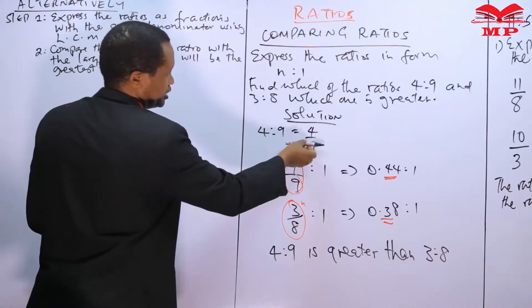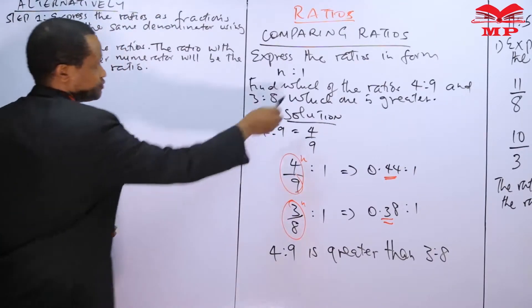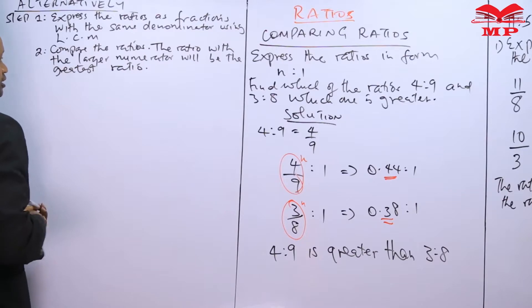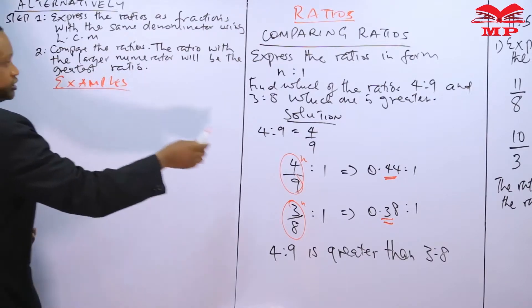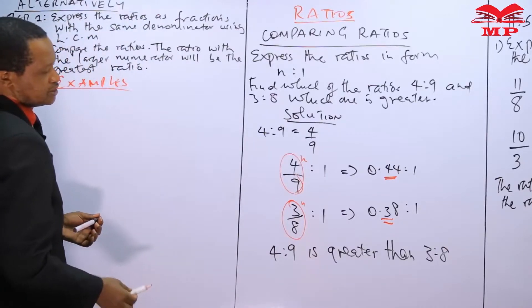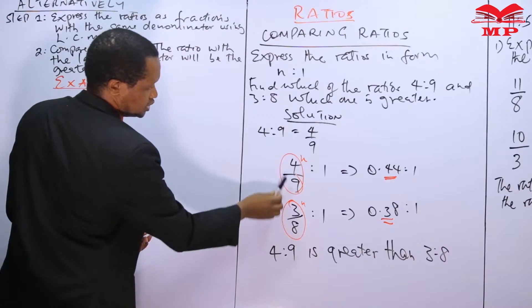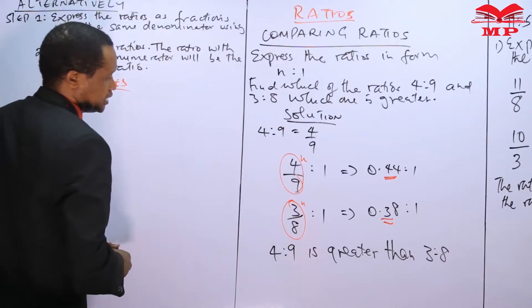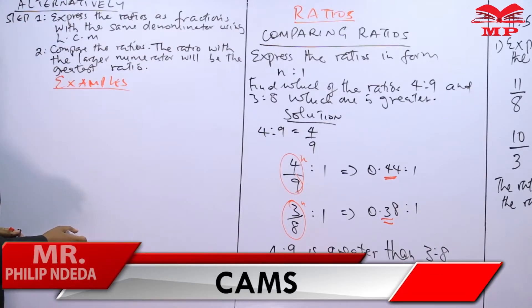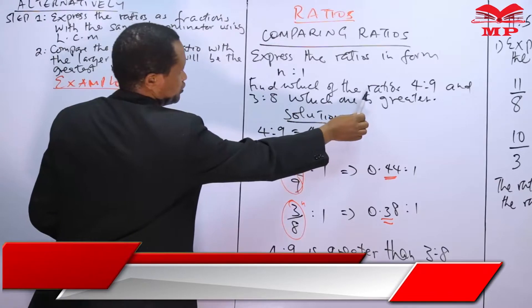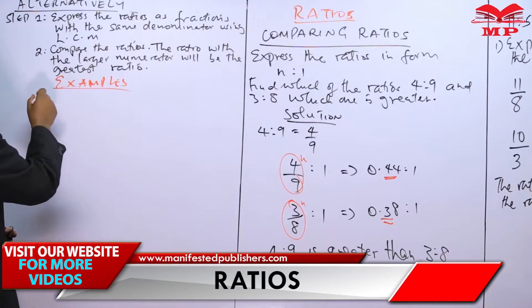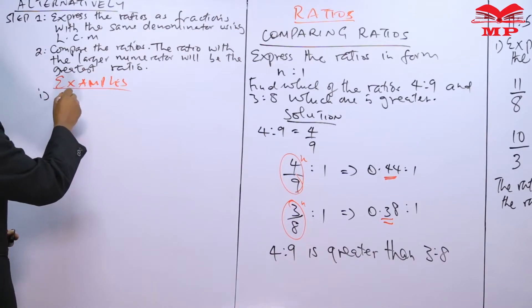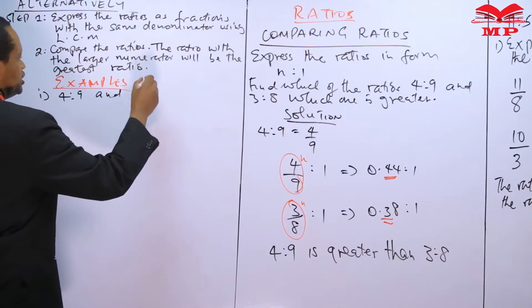We will look at examples using the same ones from the first method. Example one: find which of the ratios four to nine and three to eight is greater. Step one — express the ratios as fractions. The first ratio is four over nine and the next ratio is three over eight.